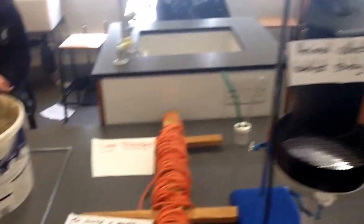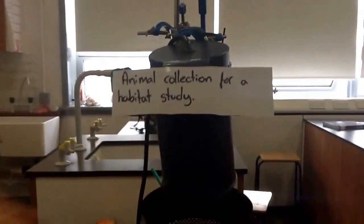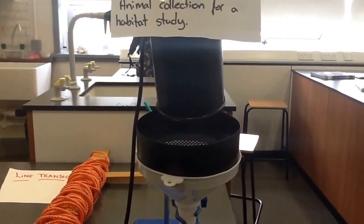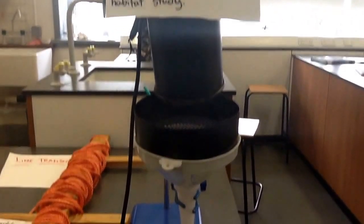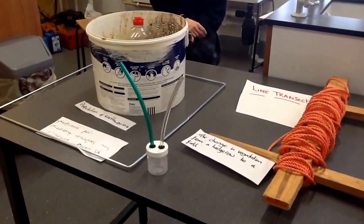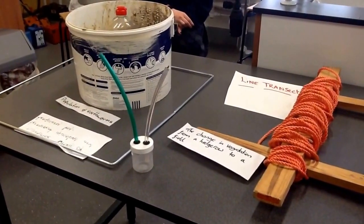The next experiment is the Tullgren Funnel. It's for collecting animals and we put a clay sample in here where the light shines and they try to get away from it and we collect it in the bottom of the alcohol. The next is a pooter that's used to collect animals as well. We put it up to the tree, up to the small insect and suck it in and we collect the small insects. Those are the ecology experiments.